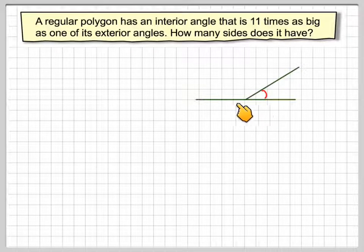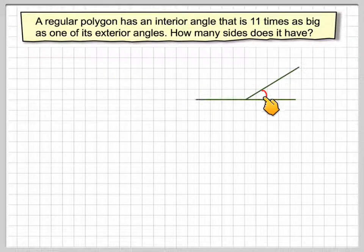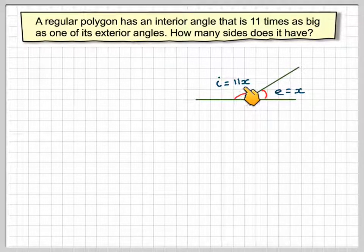If we just draw part of the polygon, this here would be the exterior angle. So we're going to let E be equal to X. Then this one here, the interior angle I, would be 11 times X, because you're told that the interior angle is 11 times as big as one of its exterior angles.